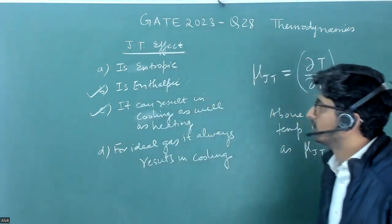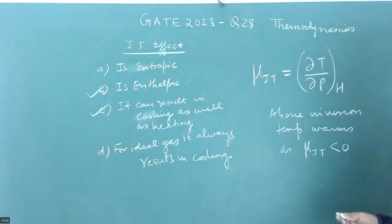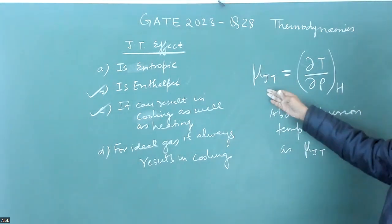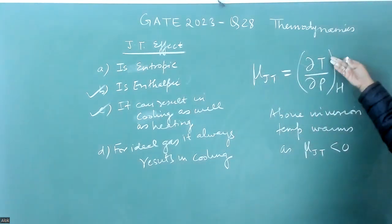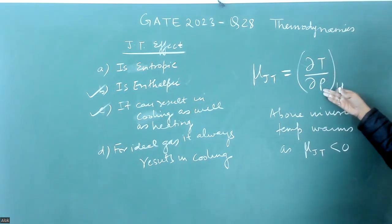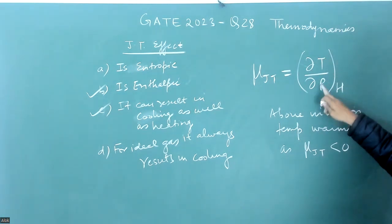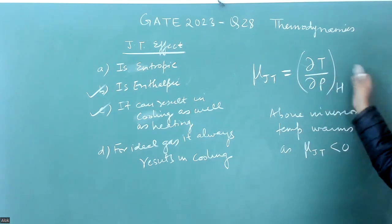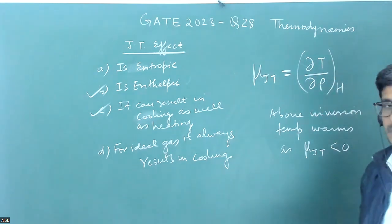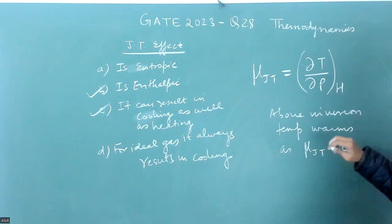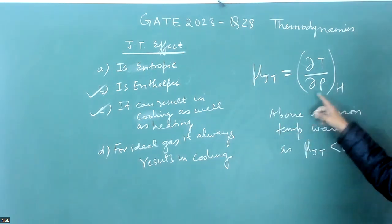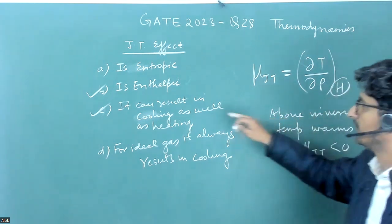The Joule-Thompson coefficient, μ_JT, is the change in temperature over change in pressure. This del P will always be negative because the gas or fluid passes from higher pressure to lower pressure. This μ_JT is measured at constant enthalpy, which is why this option is correct.